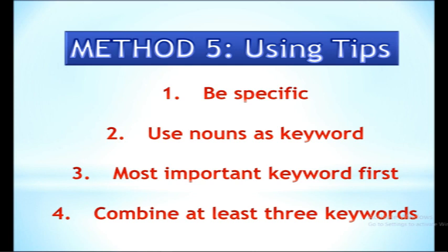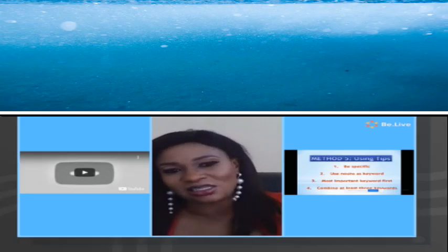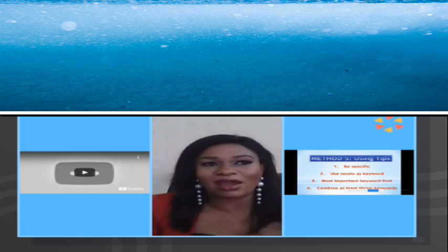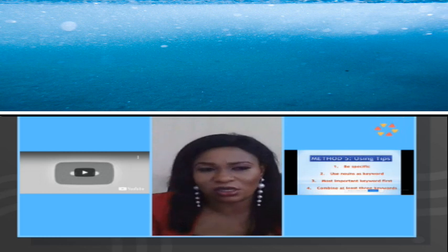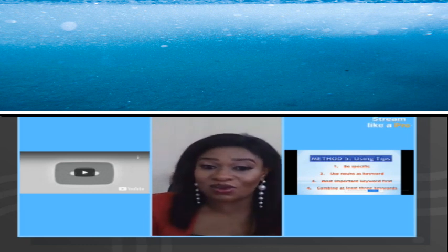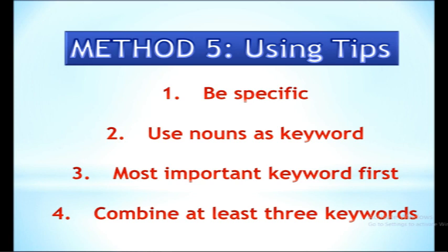Also use nouns in your search, because if you don't use nouns you may get unwanted results. For instance, if you're looking for cloning in Africa, use 'clone in Africa' since cloning is a verb — using the noun form gives you more precise results. Another important point: put your most important keyword first. Even if you're using Boolean operators, put the most important keyword first. In a research on plagiarism among students in university, plagiarism should go first. Also, combining at least three keywords will help make your search results more specific.